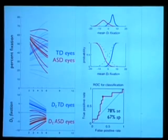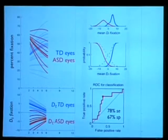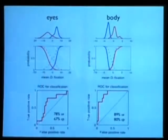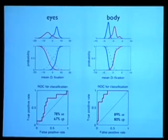Using this kind of data, we could calculate sensitivity and specificity — classifying those children based on data from the first six months of life. We could pick up 78% of the children who eventually became autistic, and of those who had a screen positive, about 67% actually had autism. When we look at fixation to body, those numbers were much higher: sensitivity of 89% and specificity of 80%.